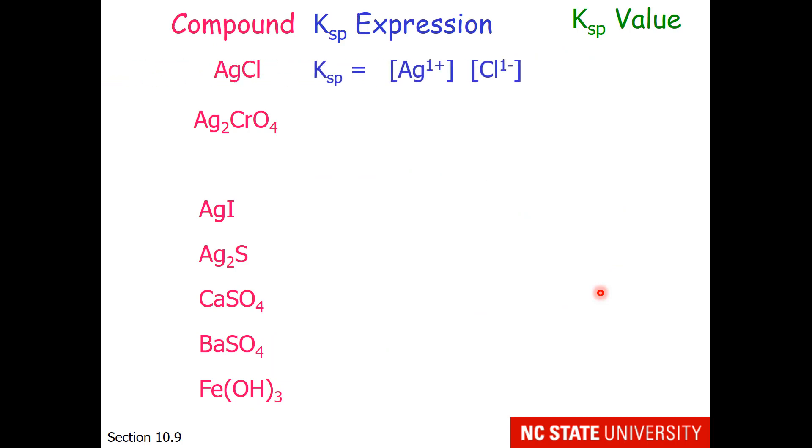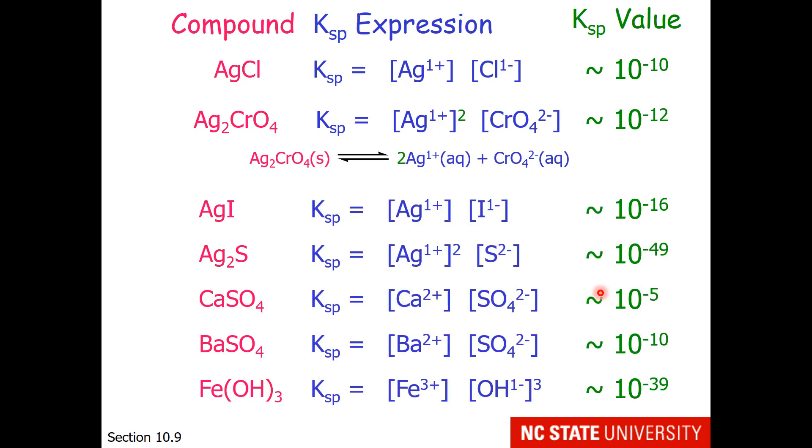Here are some common Ksps. Silver chloride, we have already mentioned. How about silver chromate? This would be silver chromate solid dissolving to make two silver ions and one chromate ion. So remember to adjust the Ksp expression so that the silver ion is squared. Also very insoluble, at 10 to the minus 12.